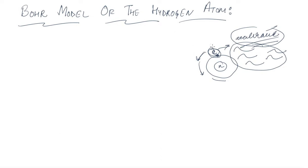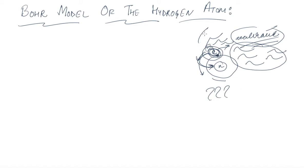The understanding was that if a charged particle is accelerated, it should emit some radiation, and would continuously lose its energy. After some time, it should collapse into the nucleus. But this is not happening — that is the key question. To address this, Bohr proposed his own model with some postulates.